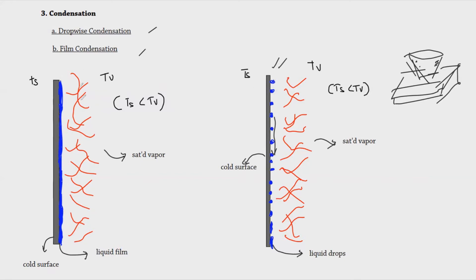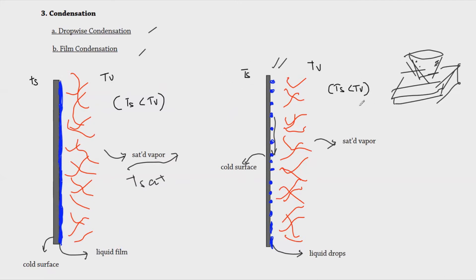Film condensation is more evident in industrial processes. It occurs on smooth surfaces where, instead of droplets forming, condensed liquid flows down continuously as a film. Dropwise condensation typically occurs on rough surfaces where surface tension builds up resistance allowing drops to accumulate. Condensation occurs when a saturated vapor meets a surface below its saturation temperature; similarly, boiling occurs when a liquid meets a temperature above its saturation temperature.